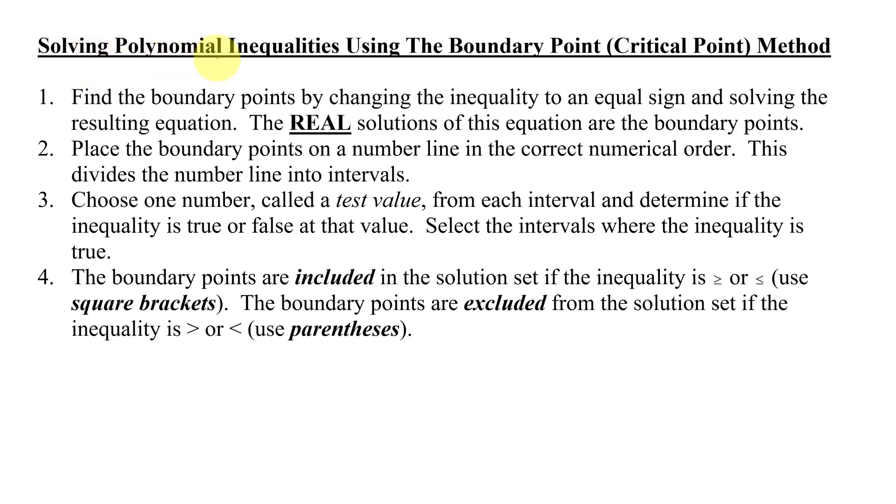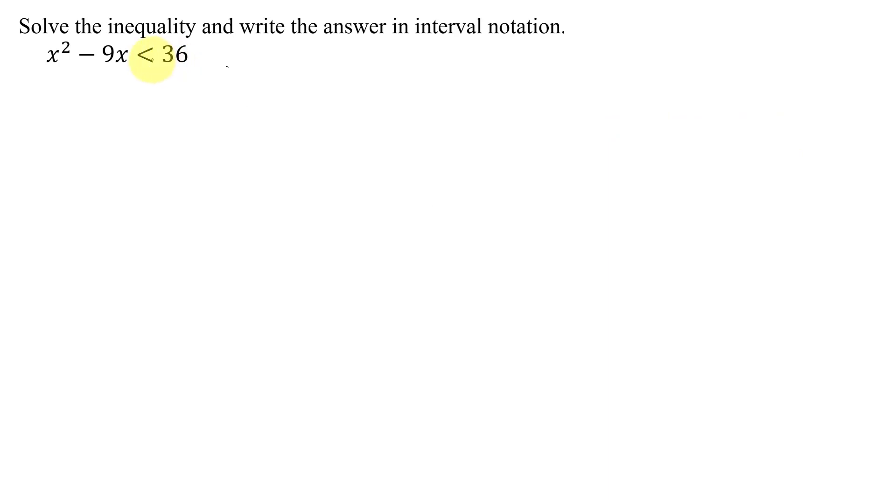Here are the steps for solving polynomial inequalities using the boundary point or critical point method. In step 1, I need to find the boundary points by changing the inequality to an equal sign and then solving the resulting equation. The real solutions of this equation are the boundary points. So looking at this problem, instead of the less than, I need to use an equals. So I'm going to have x squared minus 9x equals 36. This is a quadratic equation. To solve them, we always need 0 on one side. So I'm going to subtract 36 from both sides. And I get three unlike terms on the left-hand side.